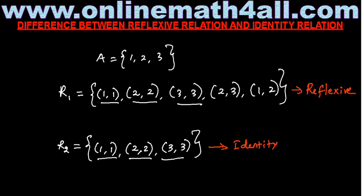In R1 we have (1,1), (2,2), (3,3), and we say that it is a reflexive relation. In R2 also, we have the same ordered pairs: (1,1), (2,2), (3,3). But here we say identity. So what is the difference?